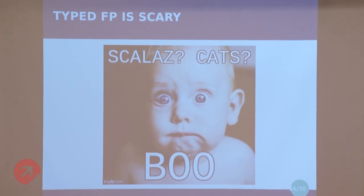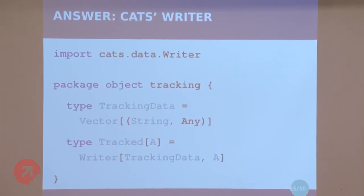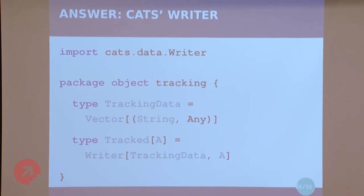My team is quite big and very diverse in terms of experience with Scala and typed FP. I had to go through questions like: do I write a very specific writer implementation that removes all that abstract stuff, or do I just reuse one? I didn't want duplication. We already had Cats on the classpath at this point, so I decided to just use Cats. Here's the sample: in the package object tracking, I have the type alias Tracked[A], which is Writer[TrackingData, A], where TrackingData is just a Vector of key-value pairs.